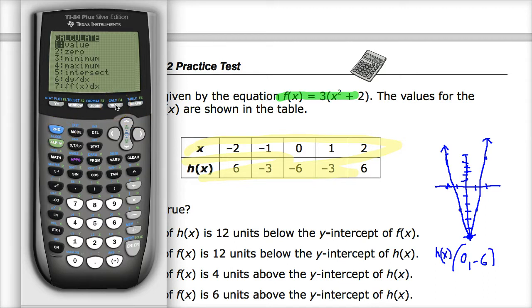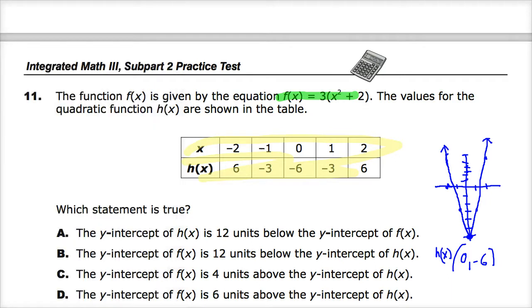And then if I want to know what the y-intercept is, if you hit second and trace on the TI-84 Plus or equivalent, you can go to the minimum if you want to do that, because it is facing upwards, the a value is not negative. You could also just go to the value. I could go to the value and say when x is 0, which is what the y-intercept is, I get 6.